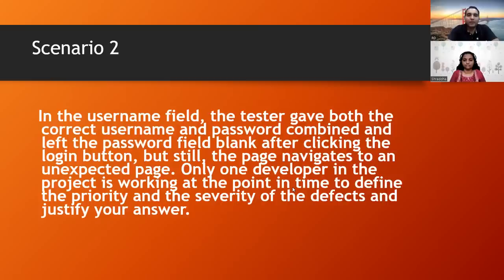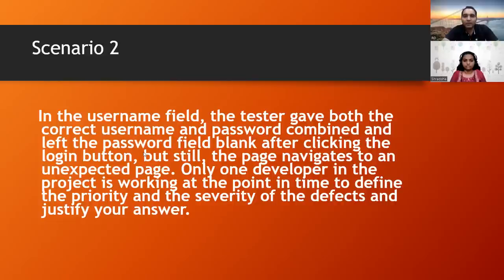Now the next scenario: you are working in a small team with one junior tester, one developer, and one project manager. There is a login page to be tested. The tester entered the correct username but left the password blank, then clicked the login button — and the page navigated to an unexpected page. There is only one developer and you have to deliver the product to the customer. How will you justify this bug and convey it?